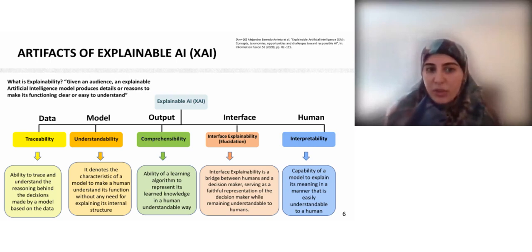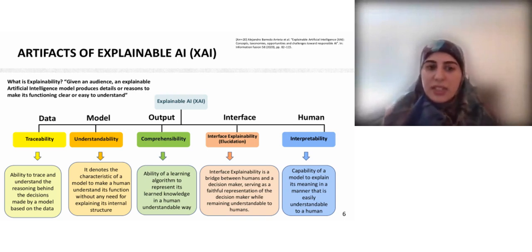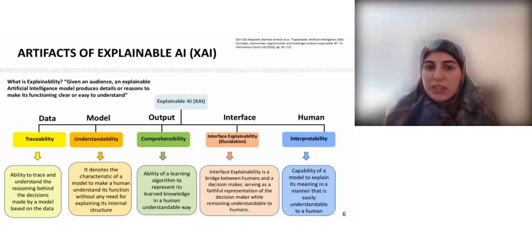Understandability is the characteristic of the model to make a human understand its function. Comprehensibility is the ability of algorithms to represent their learned knowledge in a human-understandable way. Elucidation of the user interface can provide a clear and understandable explanation for decisions to its users. And finally, interpretability, which is the ability to provide meaning for a model in terms understandable and shareable by a human.